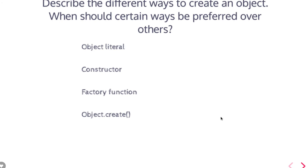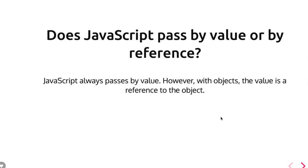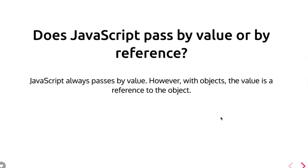Is JavaScript pass by value or reference? It depends. JavaScript always passes by value. However, with objects, the value is a reference to the object which we are passing. This is an important one.